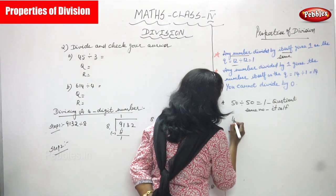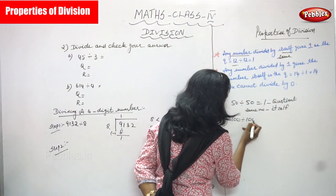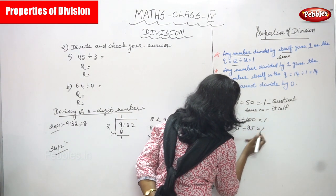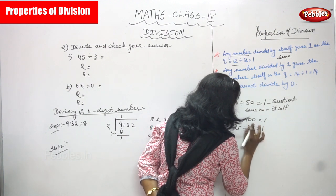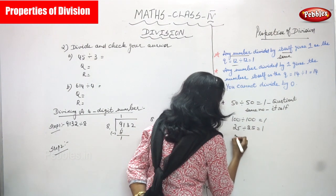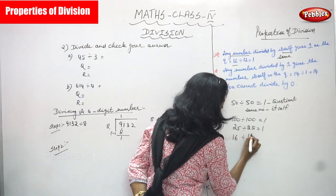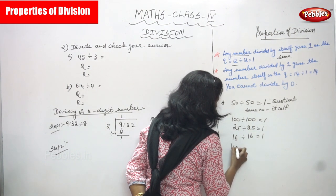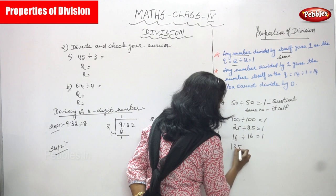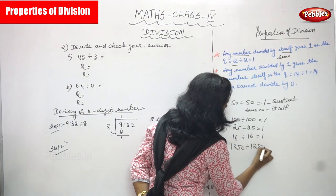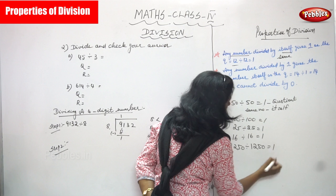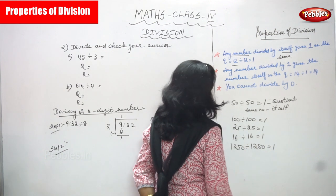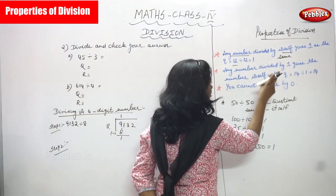For example: 100 divided by 100 gives 1; 25 divided by 25 gives 1; 16 divided by 16 gives 1; and 1250 divided by 1250 gives 1. These are examples of the first property: any number divided by itself gives 1 as the quotient.